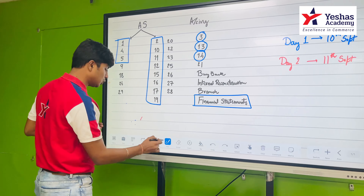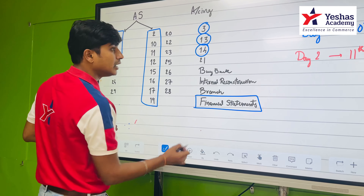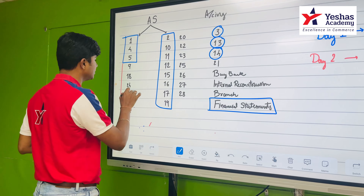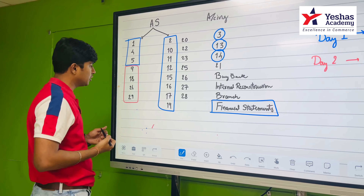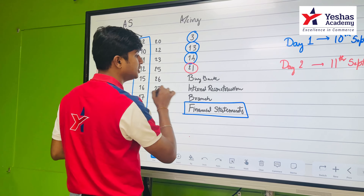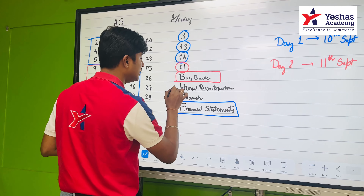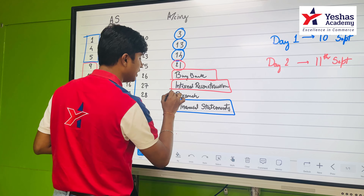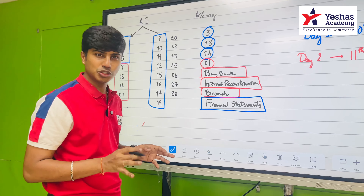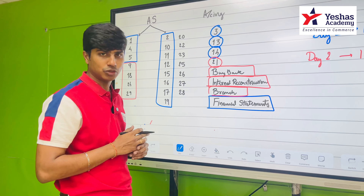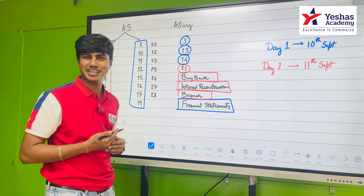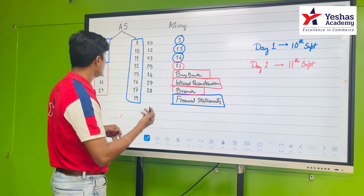Coming to Day 2, that's 11th of September — the day before the examination. You can start your day with AS 9, 18, 24, and 29. After that, let's do Consolidation, Buyback, Internal Reconstruction, and Branch. When we do Internal Reconstruction, don't forget to do the questions on share surrender — we have covered it in our marathon revision video, the link to which will be available in the description or you can go to Ashes Academy's YouTube channel.